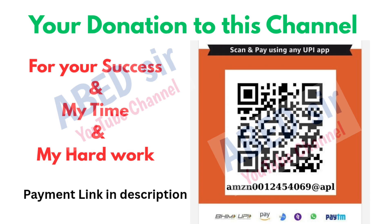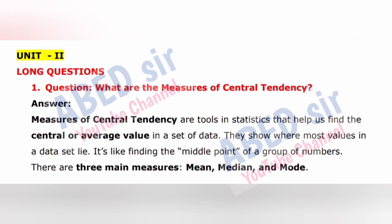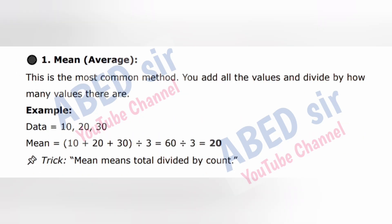Next, Unit 2 important long questions. First long question: What are the measures of central tendency? Answer: Measures of central tendency are tools in statistics that help us find the central or average value in a set of data. They show where most values in a data set lie — like finding the middle point of a group of numbers. There are three main measures: mean, median, and mode. 1. Mean (average) — the most common method. Add all values and divide by how many there are. Example: Data = 10, 20, 30. Mean = (10+20+30)/3 = 60/3 = 20.